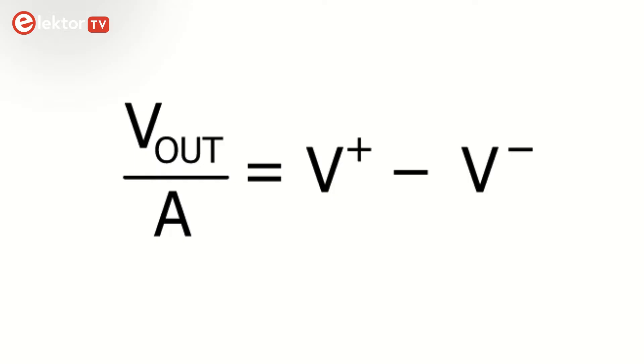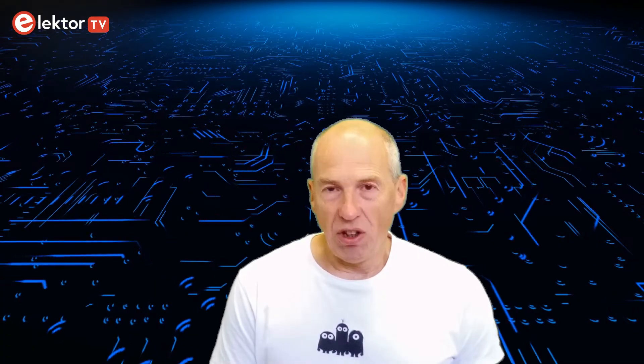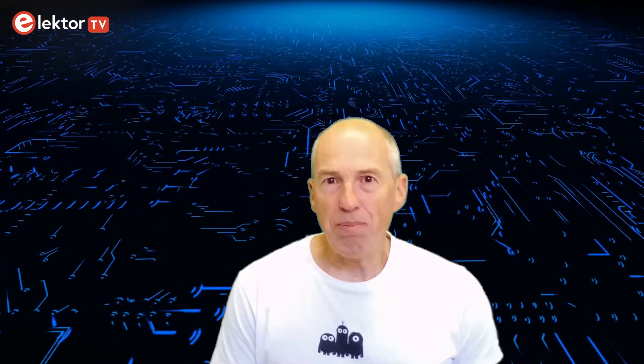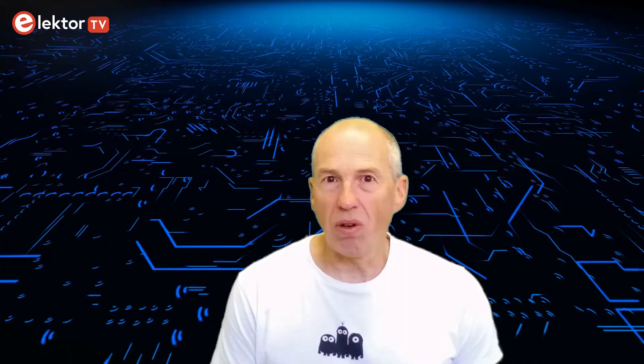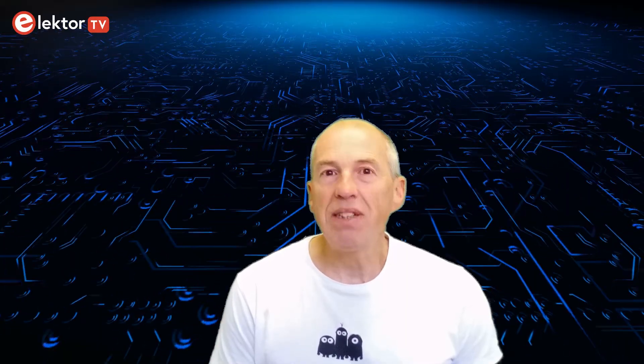Dividing by A gives this. And since A is much, much larger than Vout, this can be simplified to this. In other words, V plus equals V minus. This is a strange result, as V plus and V minus are inputs, over which the Op-Amp has no control. Yet keep this equation in mind, as you will see in a few minutes how to make use of this.